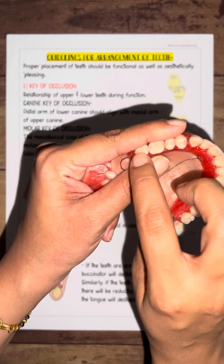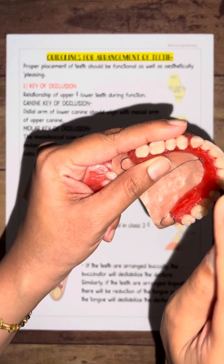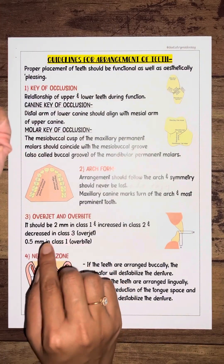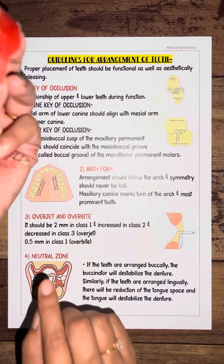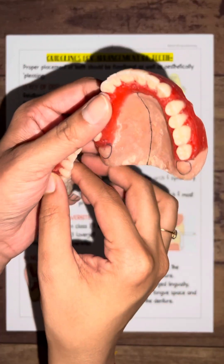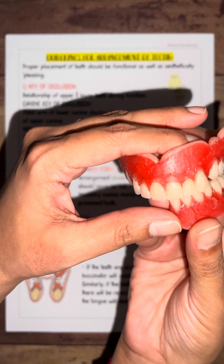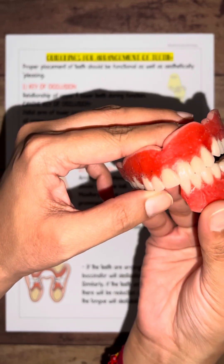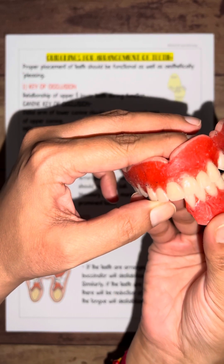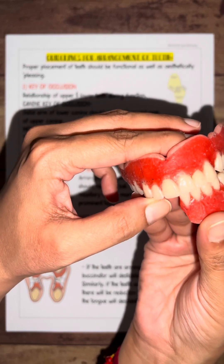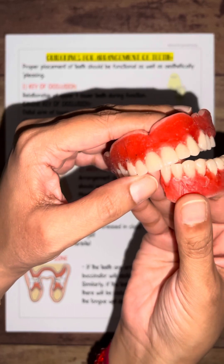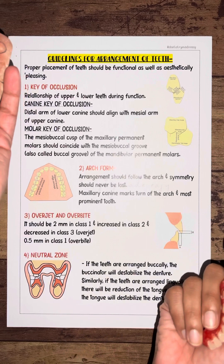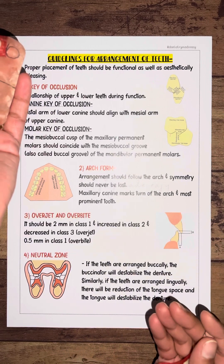The next guideline covers overjet and overbite, which are the horizontal and vertical relationships. Overjet is the horizontal overlapping — your upper teeth are slightly ahead of your lowers. In ideal cases it should be around 2mm in class one, increased in class two, and decreased in class three.